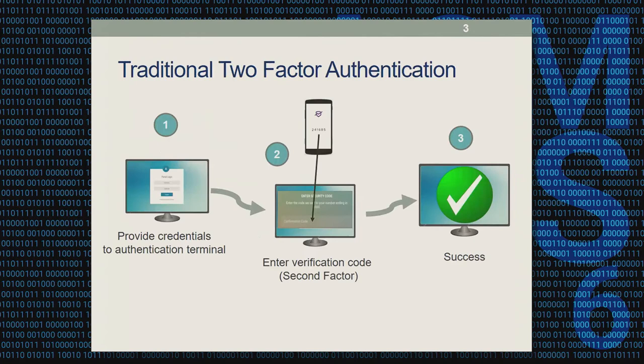In the traditional two-factor authentication, the user first provides the username and password, which then generates a one-time PIN transmitted or generated on the authentication token — typically a phone device. The user is required to copy that one-time code to the authentication terminal. The first factor is the username and password, and the second factor is possession of the authentication token, verified by copying the code to the terminal. This approach improved the security of the scheme.